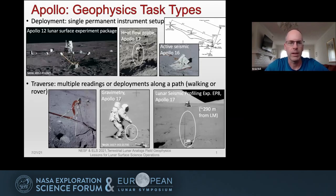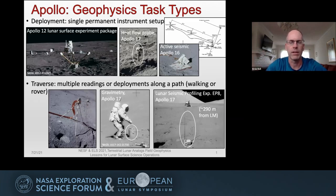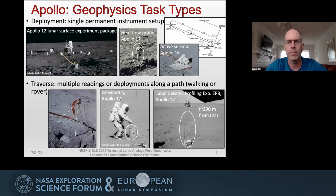Starting back in Apollo, the geophysical task types could be grouped into two different types of tasks. The first would be deployments — instruments that are put out and left, set up one time — such as the Apollo 12 lunar surface experiment package, which had a multitude of various types of instruments that were deployed. It also included heat flow probes and active seismic lines such as the geophone line from Apollo 16.